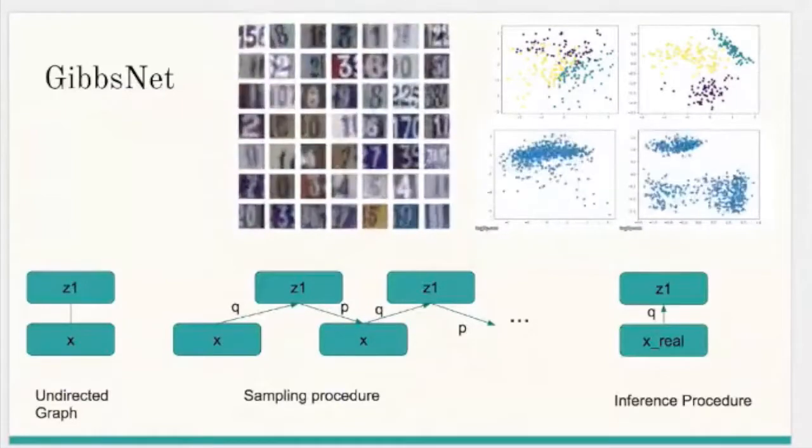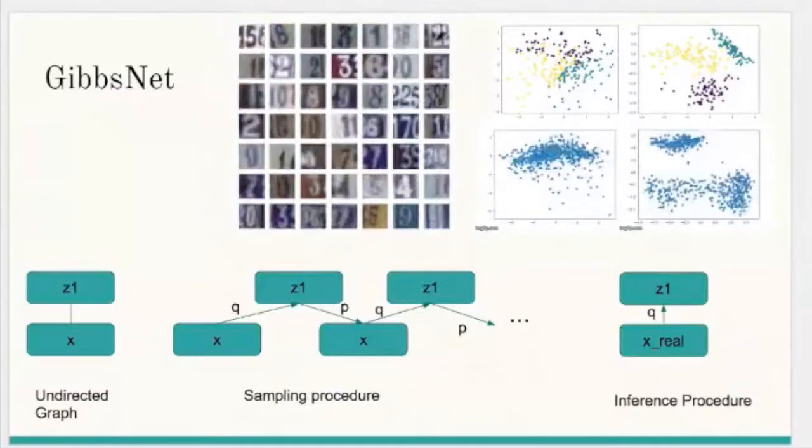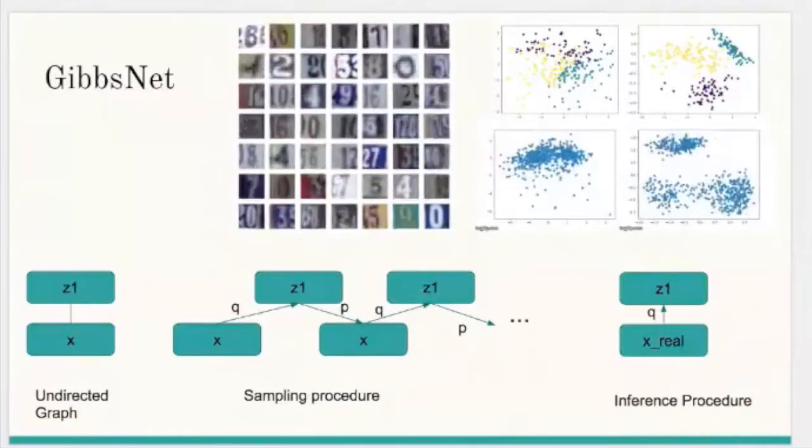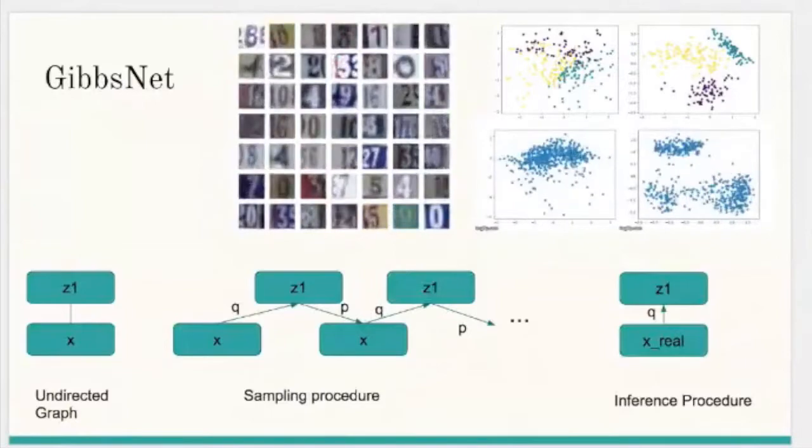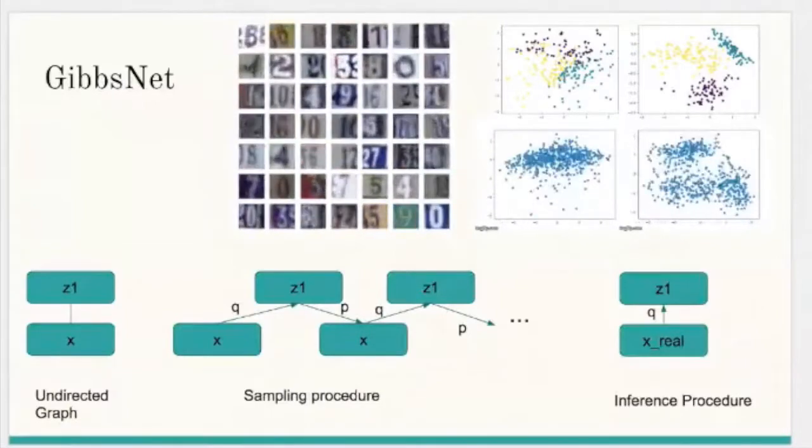Undirected latent variable models discard the requirement that P(Z) be specified with a prior, yet sampling from them generally requires an iterative procedure such as block-Gibbs sampling that may require many steps to draw samples from the joint distribution between X and Z.